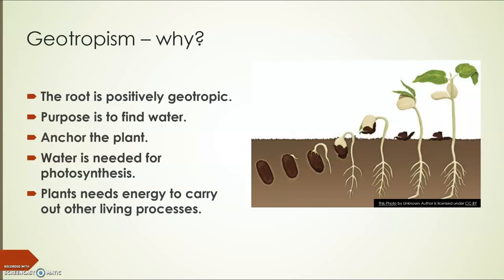First of all you need to state the name of the response. So a root would be said to be positively geotropic as it grows towards gravity. You also then need to expand and say why. So why does this happen?